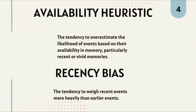Availability heuristic is the tendency to overestimate the likelihood of events based on their availability in memory, particularly recent or vivid memories. This bias occurs when we overestimate the importance or likelihood of events based on how easily they come to mind. For example, after watching news reports about airplane crashes, people overestimate the danger of flying even though it is statistically much safer than driving.